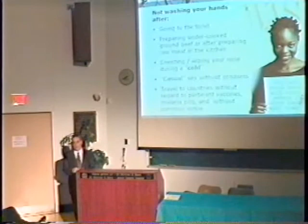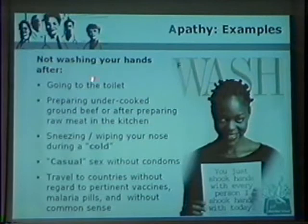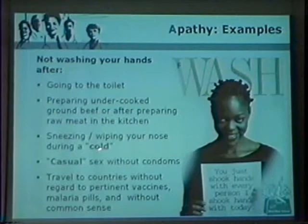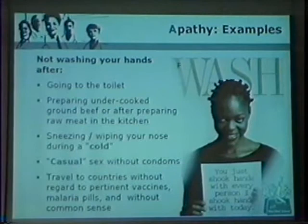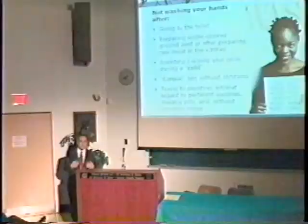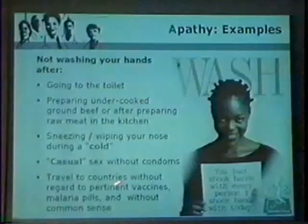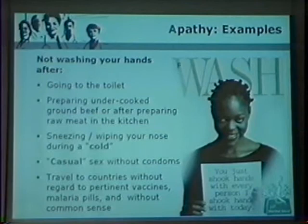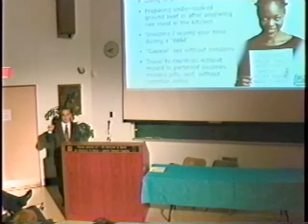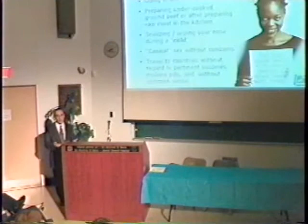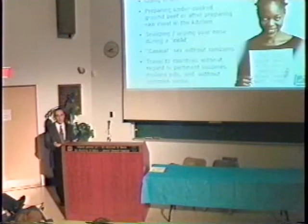Then there's the other extreme — apathy — which is just as bad. The people who go to the toilet and don't wash their hands. The people who prepare undercooked beef or chicken and don't wash their hands. People who sneeze and wipe their nose and then shake your hand without washing. I deal with sexually transmitted diseases a lot in our clinic. If you don't talk to adolescents and young adults about condoms and safe sex, they're going to get sexually transmitted diseases. Those who travel to India, Africa, and Asia every year without getting vaccines or taking malaria pills, and wind up in our emergency room with fevers of 105 near death — that's the typical apathy.